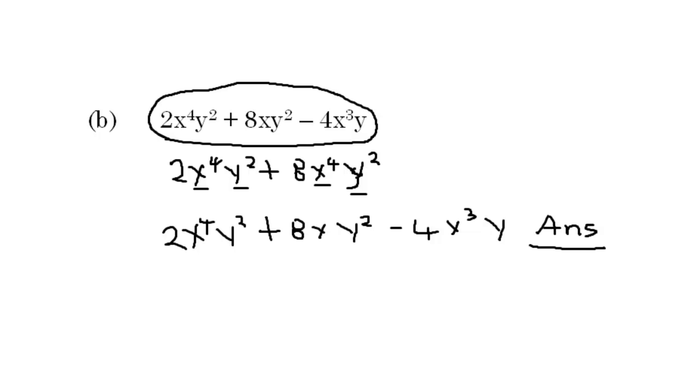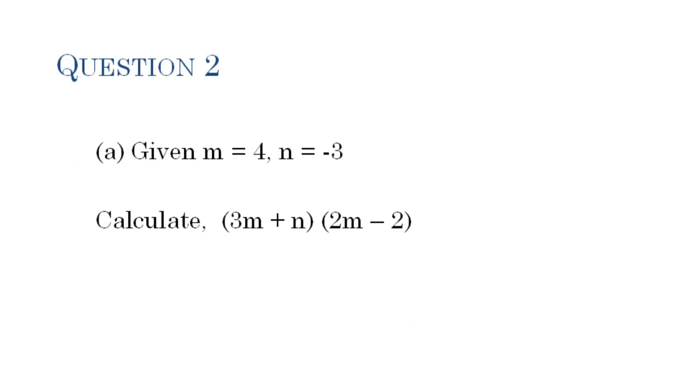Let's go on to the next question. This is question 2. Question 2 says, given m is equal to 4, n is equal to minus 3, it asks us to calculate 3m plus n multiplied by 2m minus 2.